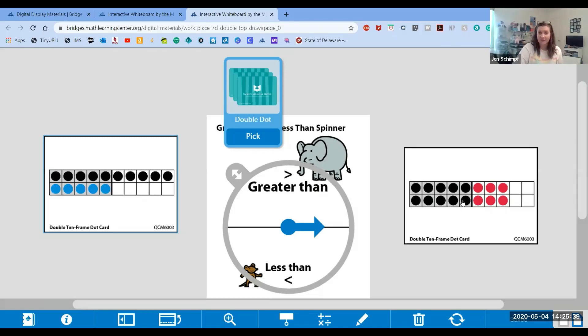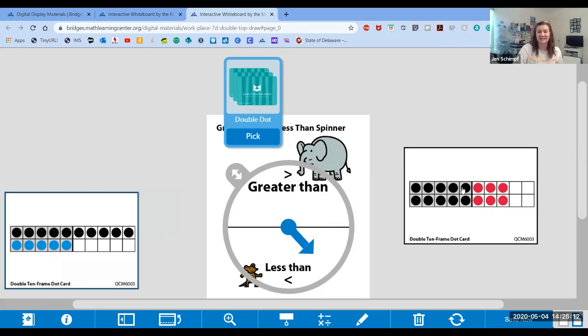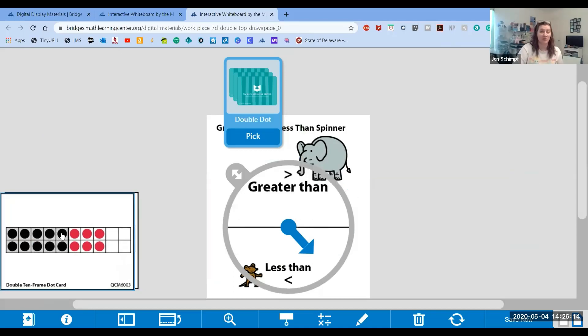Now look at mine. Mine is in top and bottom. Mine is side by side. So I have 10 on this side and 6 more. 10 and 6 makes 16. You have 15. I have 16. Now we need to spin to see if we're looking for the number that's greater, like the big elephant, or the number that's less, like the little mouse. Do you want to spin it? Go ahead and push the button. Less than. Which of us had less? Yes, 15 is less than 16. So you get to keep both cards.